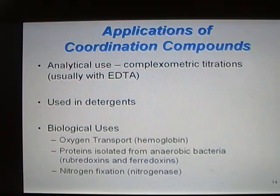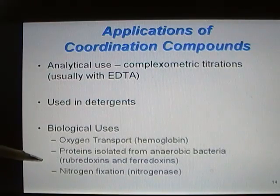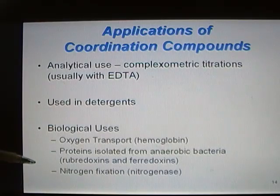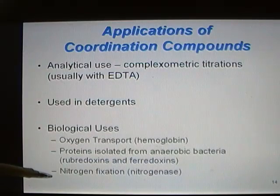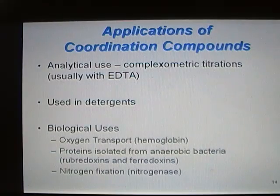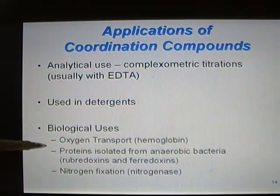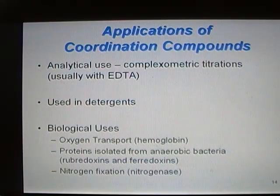Coordination compounds have biological uses as well. For example, oxygen transport in our body is carried out through hemoglobin. Proteins isolated from anaerobic bacteria — bacteria that do not use oxygen — are also very important in their energy formation; rubrodoxins and ferrodoxins do just that. And some bacteria can do nitrogen fixation using an enzyme called nitrogenase. For the rest of this discussion, we'll focus on the biological uses of coordination compounds.